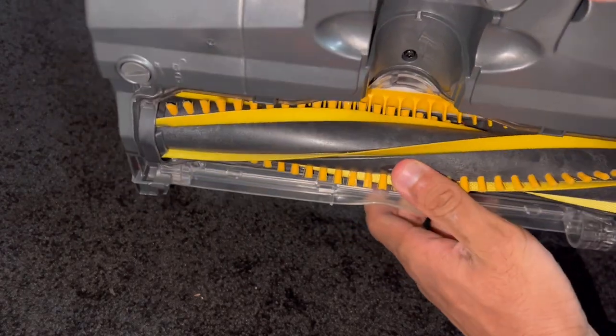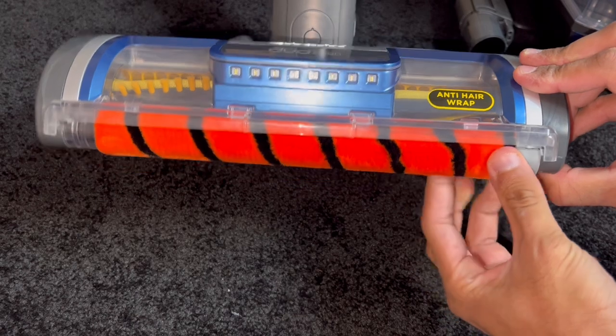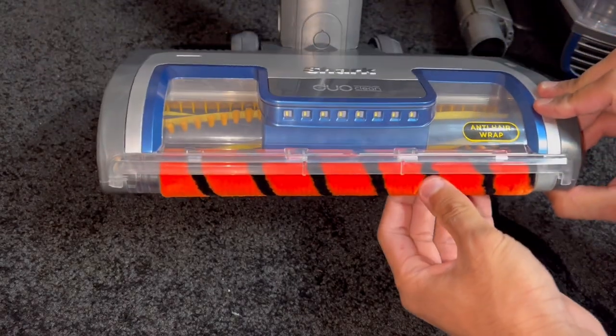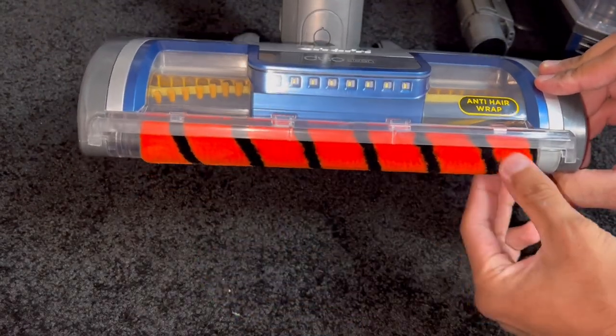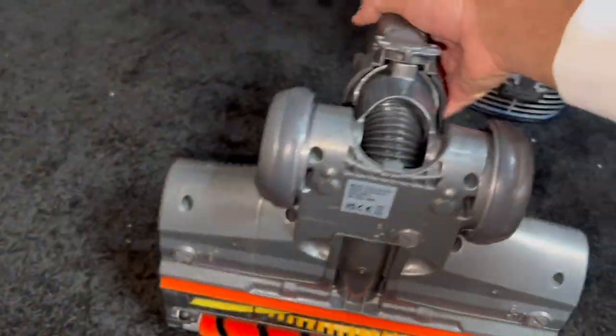There's your comb right on the back which helps to dislodge the hair from the brush bar. This soft roller is the only thing you can wash on this entire cleaner head. Do not wash anything else, just this part. Pop your sole plate back on, tighten the plastic screws, and that's it.